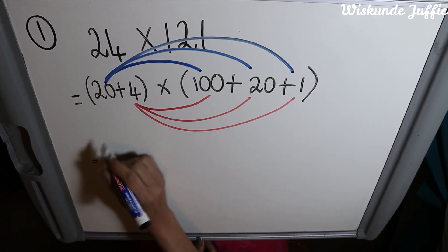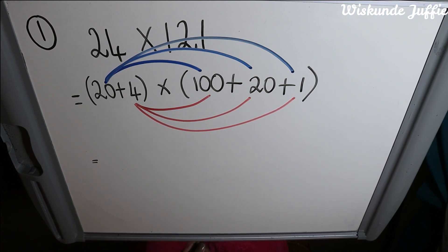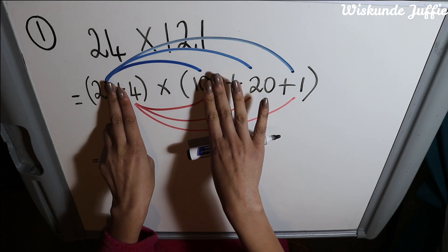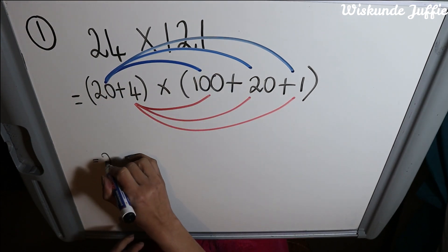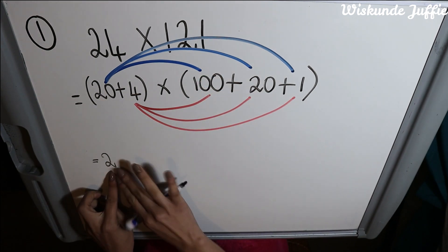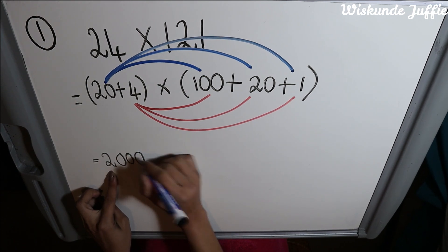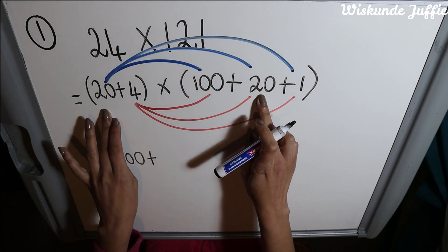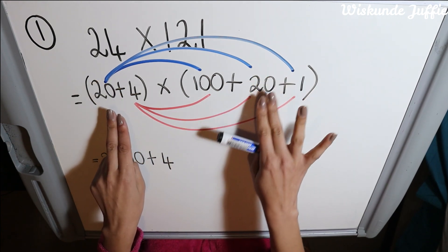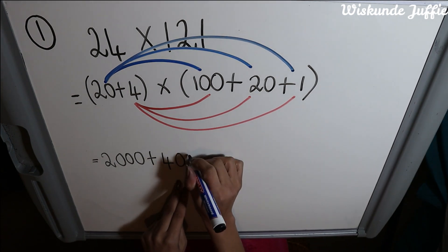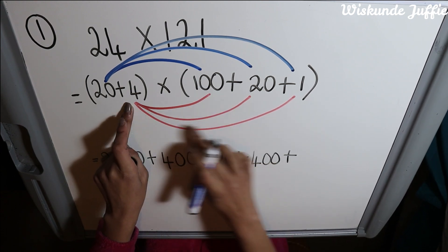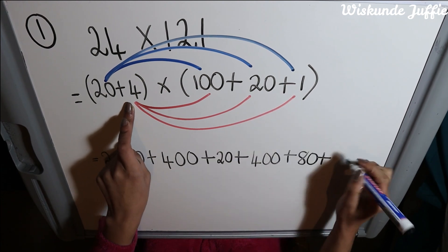I will start by multiplying 20 times 100. When I multiply numbers that have zeros, I close those zeros and multiply the numbers in front. So I have 2 times 1, which is 2, and then I closed one, two, three zeros — so I enlarge my 2 with three more zeros. Plus 20 times 20: close the zeros and 2 times 2 is 4, and I closed one, two zeros — so I enlarge my 4 with two zeros. Then 20 times 1. Plus 4 times 100 is 400, plus 4 times 20 which is 80, plus 4 times 1 which is 4.